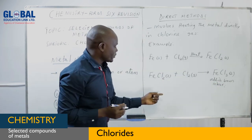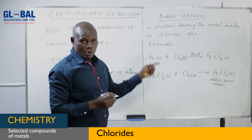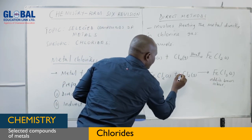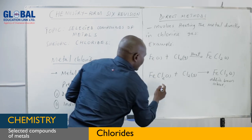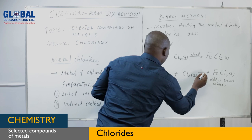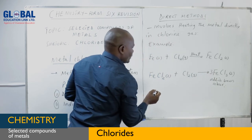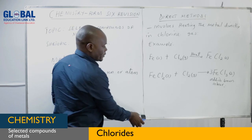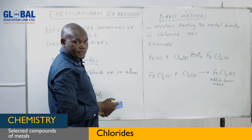This is what we call the direct method of preparation of chloride of metal. When balancing, here we can put three, giving six chlorine — it's your task to balance that equation as a student.